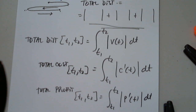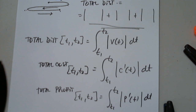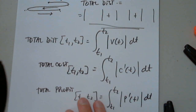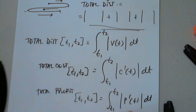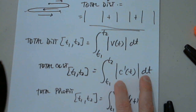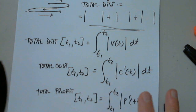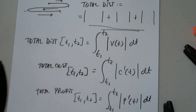We define marginal revenue as the derivative of the revenue function, where x is the number of units sold. The definite integral from 1000 to 5000 of R-prime of x dx represents the total revenue from selling 1000 to 5000 units. Notice there's no absolute value needed here because the values are all positive — they told us revenue is increasing. If we were talking about cost, the rate of change could be negative, which is why absolute value matters there.